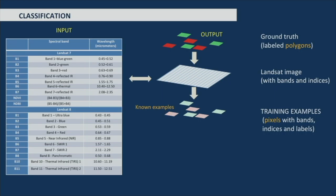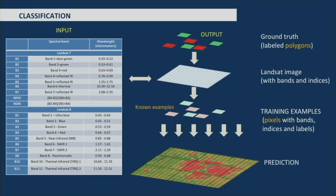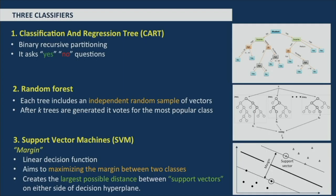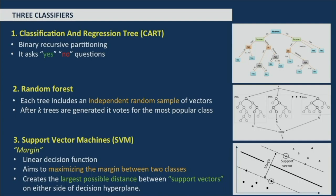We merge the inputs and labels so that for each pixel we have all the features and the label, making each pixel a training example. We use all training examples to train a classifier and predict built-up areas over new examples — in our case, over India. We used three types of classifiers: CART, a decision tree with binary recursive partitioning; Random Forest, an ensemble of many trees; and SVM — support vector machines — a linear decision function that aims to minimize the margin between the two classes.